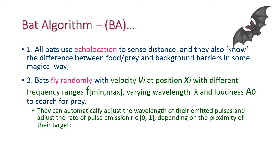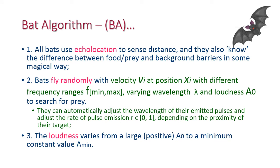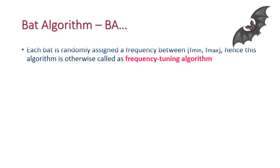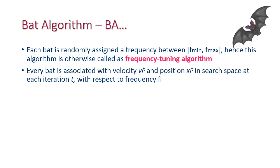They can automatically adjust the wavelength of their emitted pulse and adjust the rate of pulse emission. The rate falls between 0 and 1 depending on the proximity of the target. The third rule: the loudness varies from large positive value to minimum constant value. Each bat is randomly assigned a frequency range between minimum to maximum, hence this algorithm is otherwise called frequency tuning algorithm.